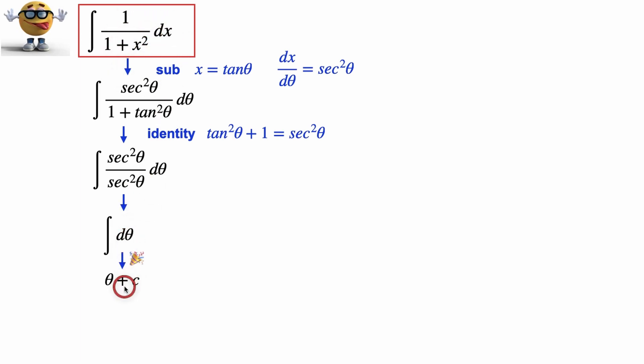Now, we want things in terms of x, not theta, so we're going to substitute back. If x equals tan theta, then to solve for theta, we've got to take the inverse, so theta equals tan to the negative 1 of x.